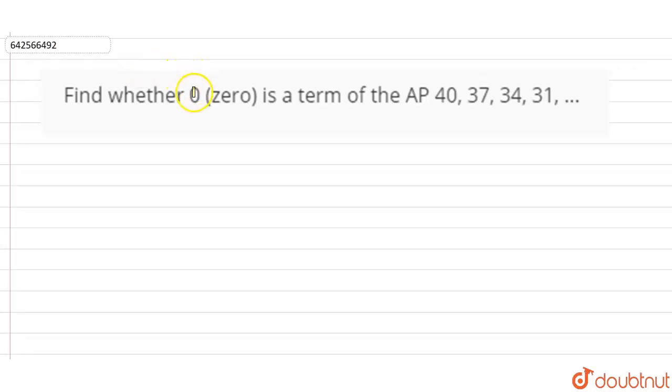So the question is: find whether 0 is a term of the AP 40, 37, 34, 31.